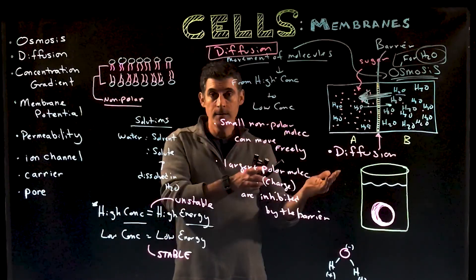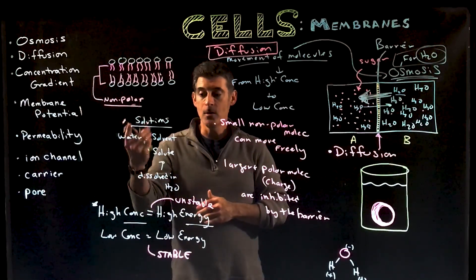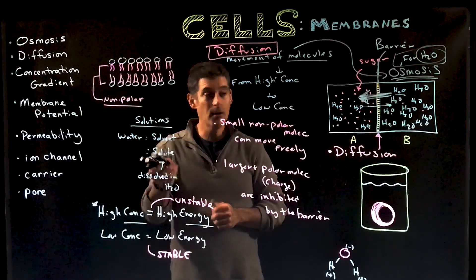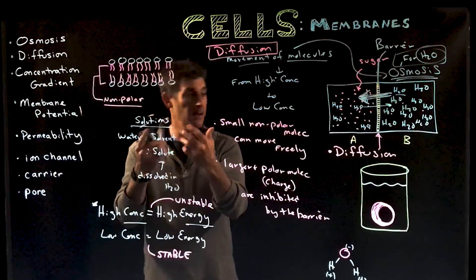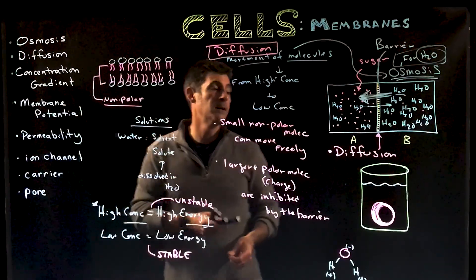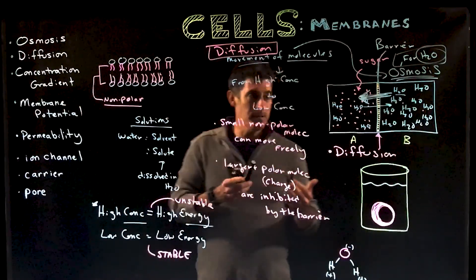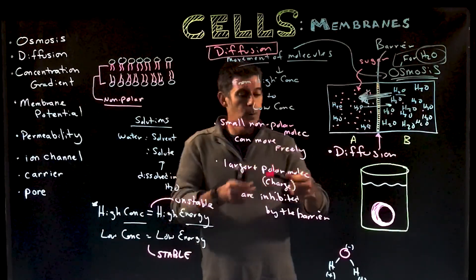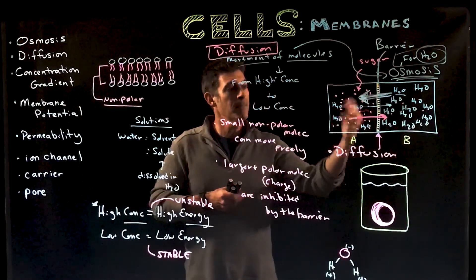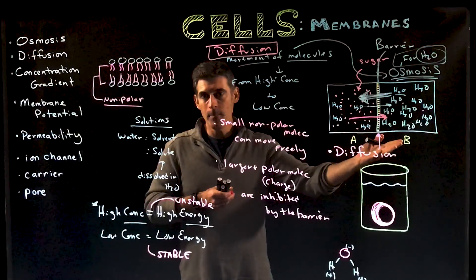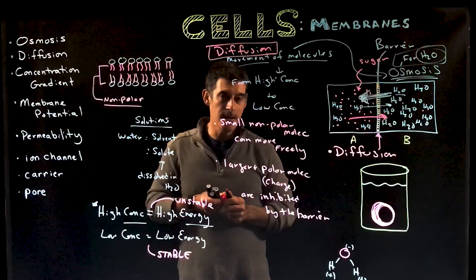Usually, the water concentration is opposite the solute concentration. If there's a lot of sugar, there's less water. If there's less sugar, there's more water. So if the sugar wants to move in one direction from A to B, the water molecules are going to want to move in the opposite direction, from B to A.